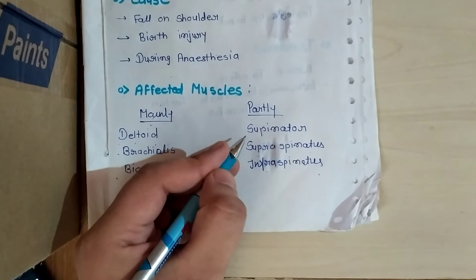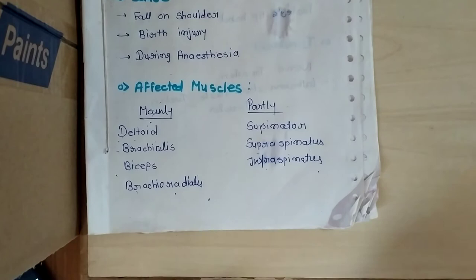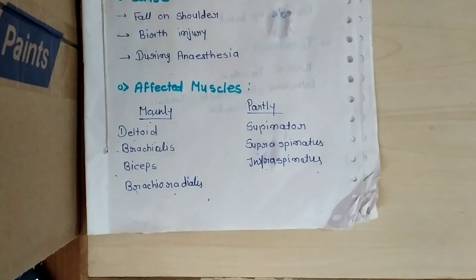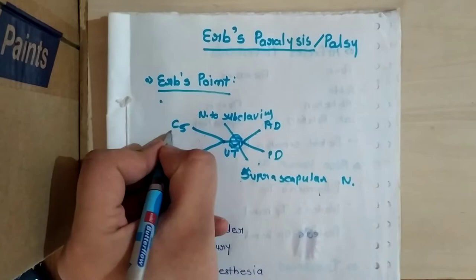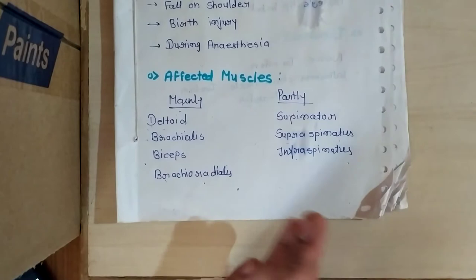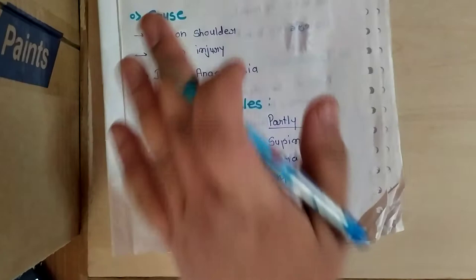Partially, the muscles are supinator, supraspinatus, and infraspinatus. Supinator muscle is also supplied by radial nerve. Supraspinatus and infraspinatus both muscles are supplied by suprascapular nerve. The suprascapular nerve root value, as we have seen here, is C5 and C6.